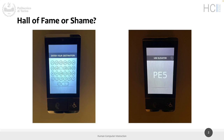The buttons are very close together, making it easy to press the wrong floor. If you do, the system sends you to the wrong elevator. Also, you don't get confirmation of which floor you pressed — you'd have to read a small screen outside the elevator to verify. It can be a problem, though not a huge one.